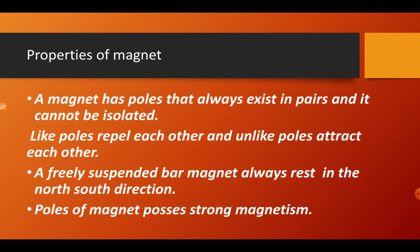Now let's continue with the properties of magnet. A magnet has poles — in a bar magnet the two ends are considered as the poles. These poles always exist in pairs and cannot be isolated. Like poles repel each other and unlike poles attract each other. A freely suspended bar magnet always rests in the north and south direction. Poles of a magnet possess strong magnetism.